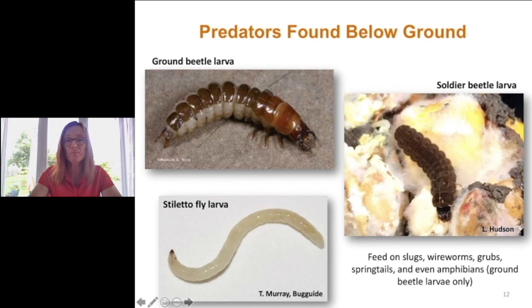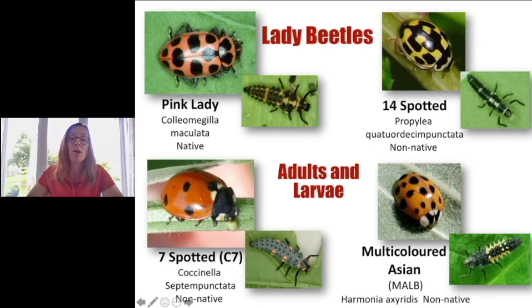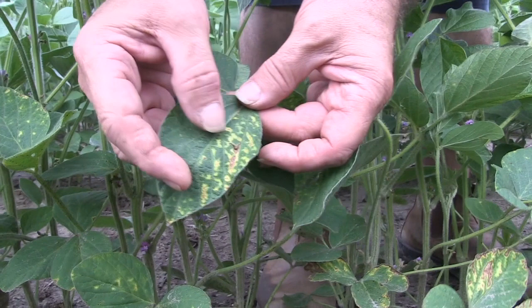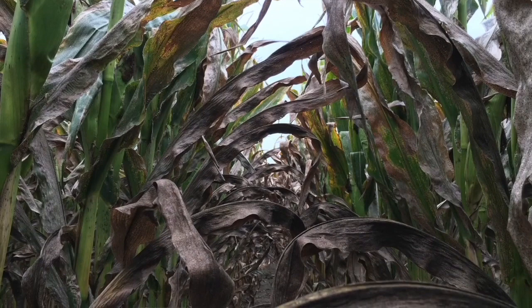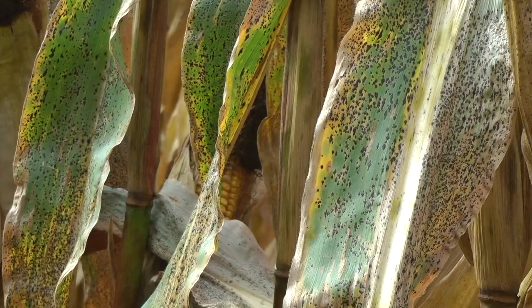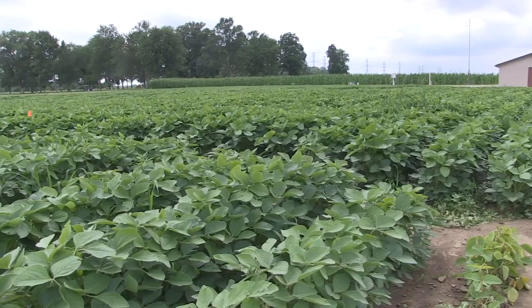Next up we have OMAFRA field entomologist Tracy Bowdy. Tracy will discuss the latest pest issues we're seeing in 2020 and review the many natural enemies — those beneficials that are working hard in your field to control yield-robbing pests. We'll then be joined again by Albert Tenuta, who will offer tips on how to manage sudden death syndrome in your soybeans. CEU credits are available for CCAs who have registered for diagnostic days — look for the URL on screen.